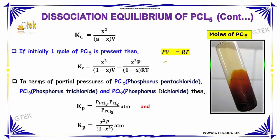Putting V here and RT here, P/RT = 1/V. You get X²P/(1-X)RT. In terms of partial pressures of PCl₅, Phosphorus pentachloride, PCl₃ Phosphorus trichloride, and PCl₂ Phosphorus dichloride, you get...